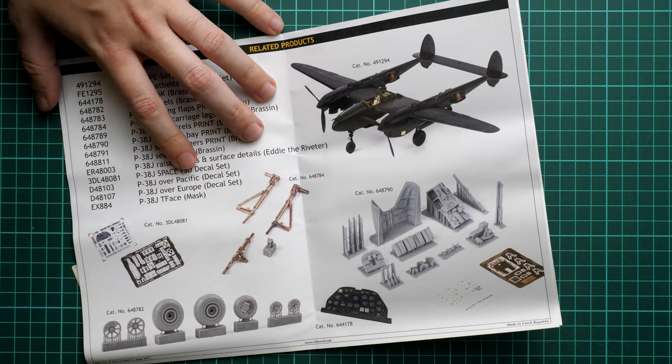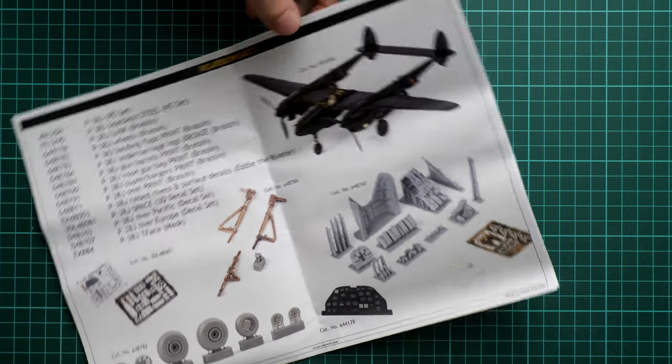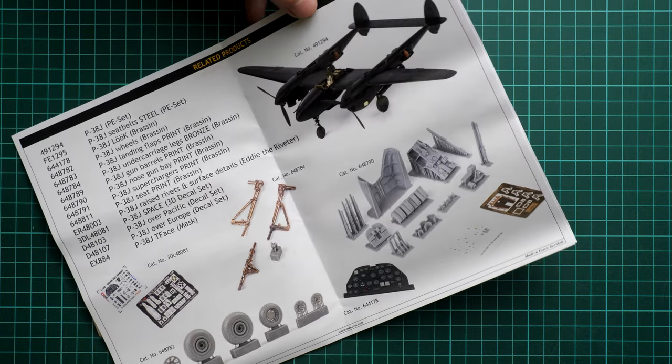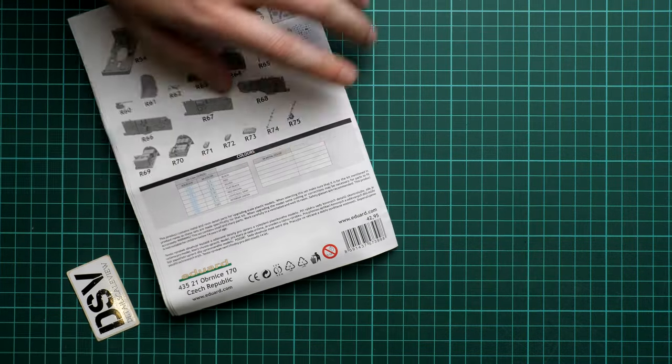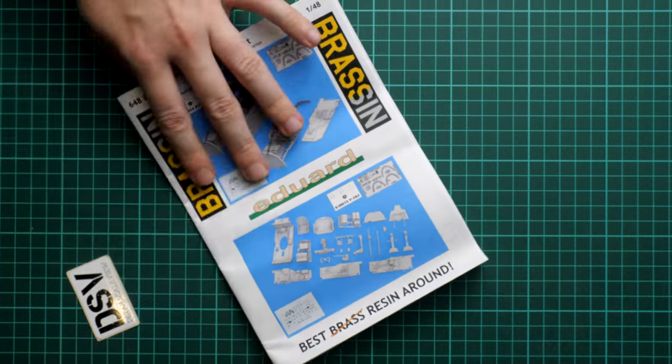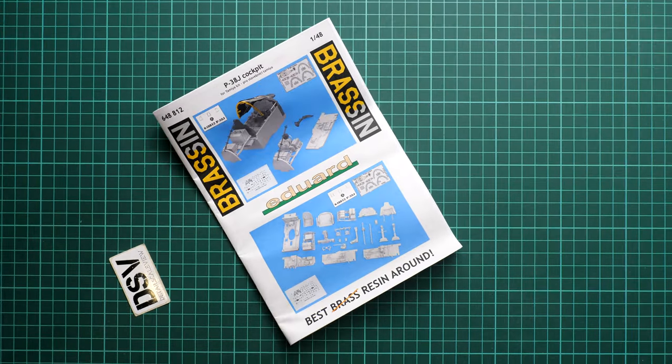We checked some of them, so you can find them easily on our YouTube channel. On the last page you can see the parts map, paints chart, and address of the manufacturer. This set should be already available and you can get it on the official Eduard website together with other P-38J sets.